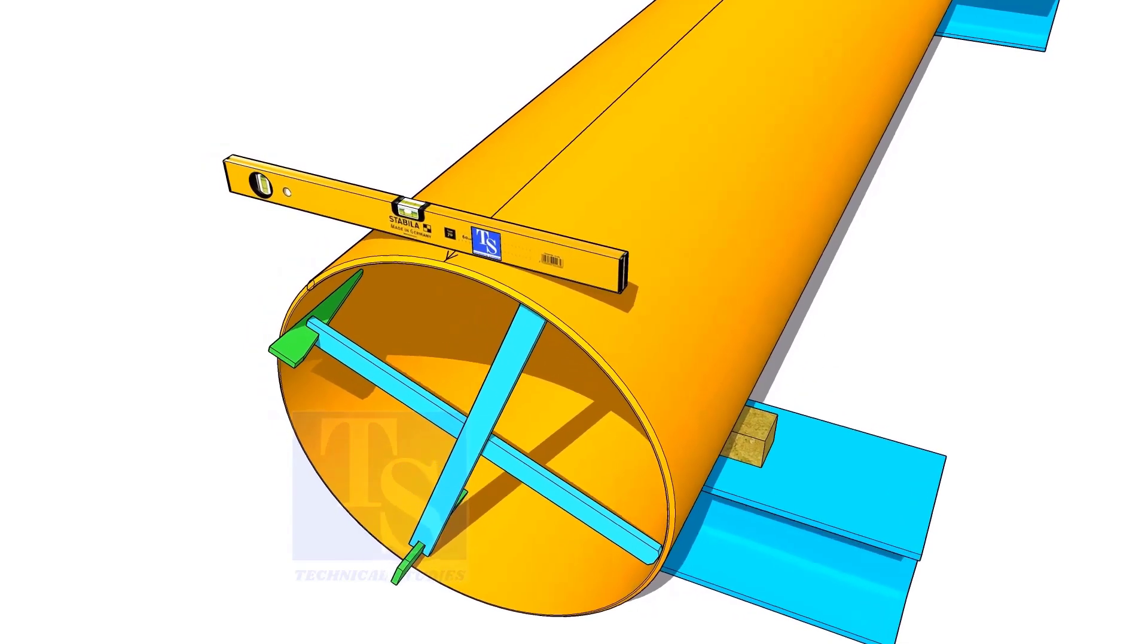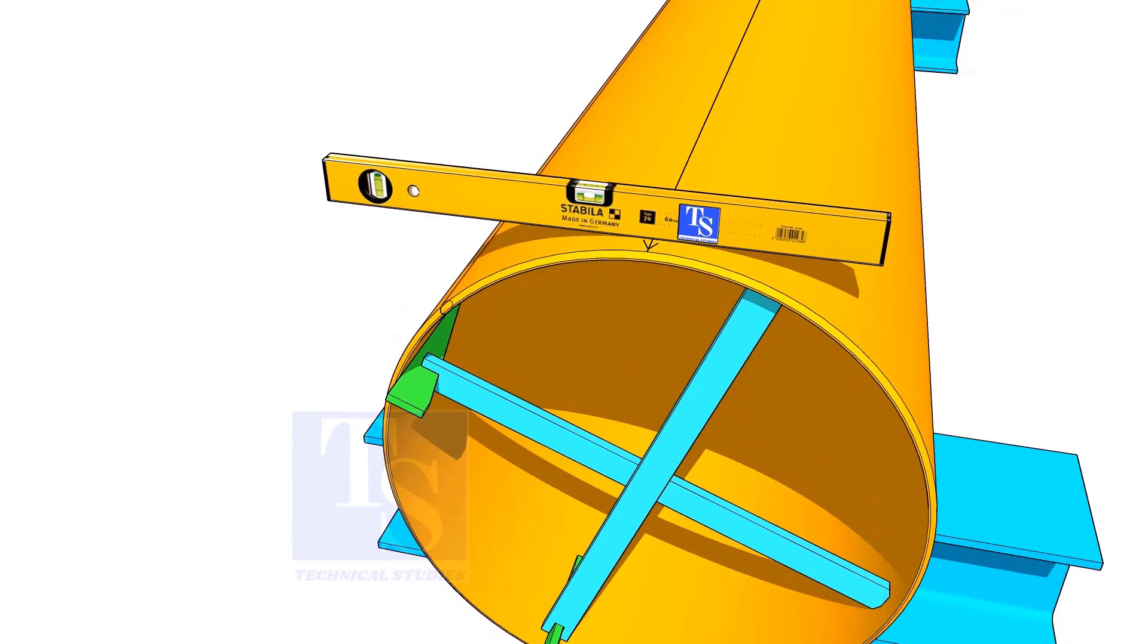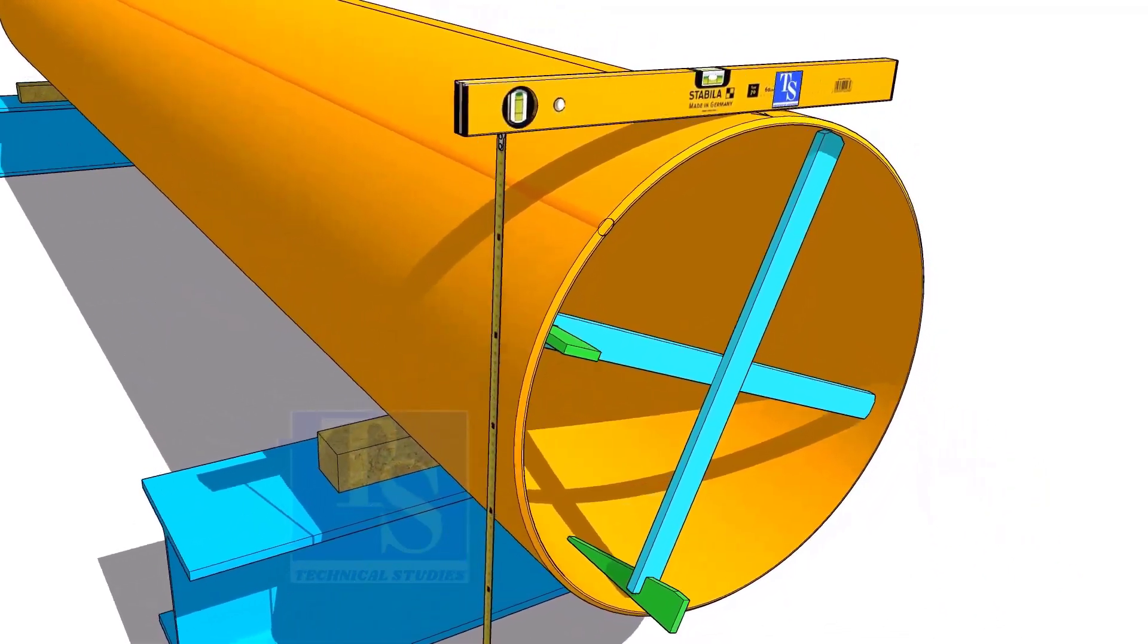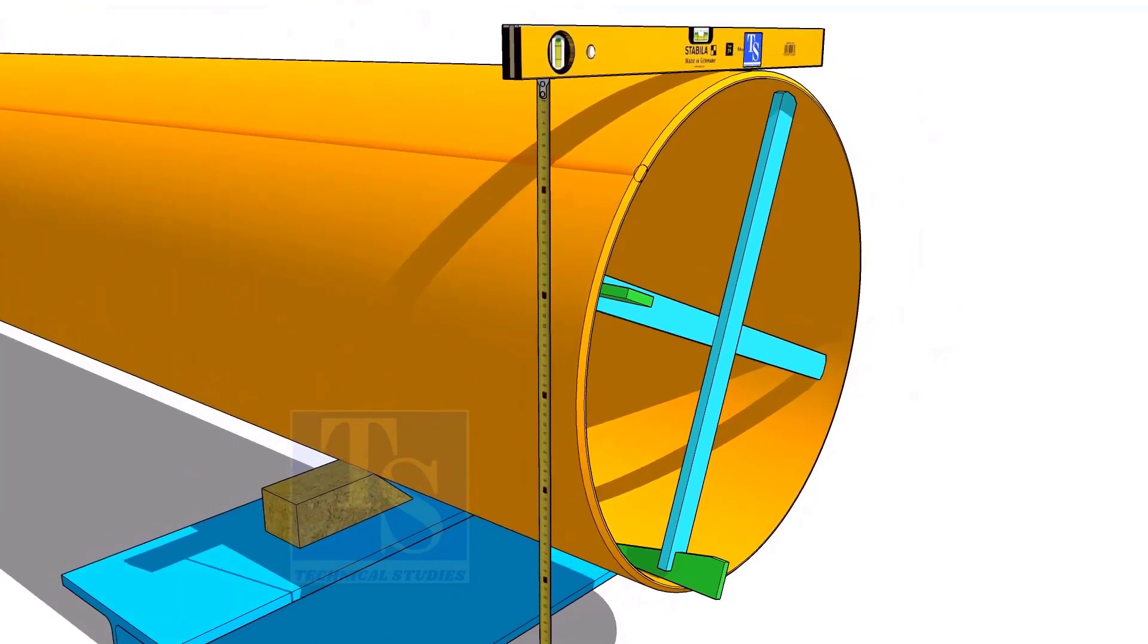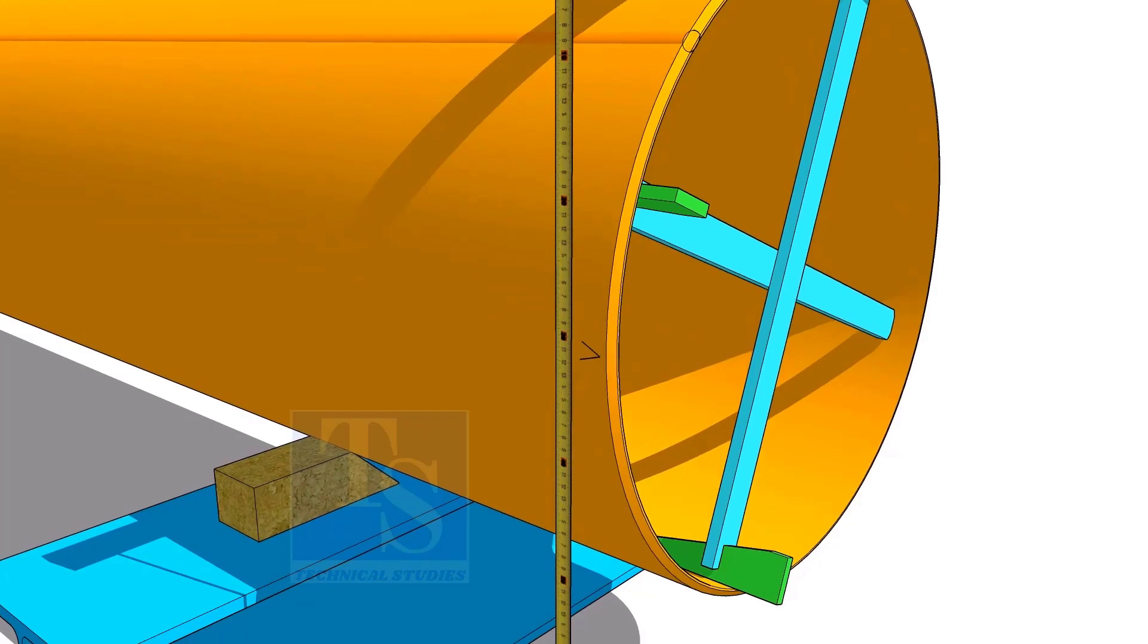Another method to mark the center line is to hold the level bottle horizontal and mark half OD on the side of the pipe. The advantage of this method is you can mark two opposite center lines at the same time.